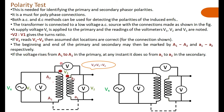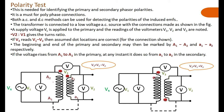If the voltmeter reads the sum V1 plus V2, then the polarity connections are not correct. Observe the second figure: the voltage V is applied and voltages V1, V2, and V3 are measured. In this case the voltmeter reads V1 plus V2. This means the polarity is such that there is a rise in potential from one point to another in both the primary and secondary, causing V3 to read V1 plus V2.